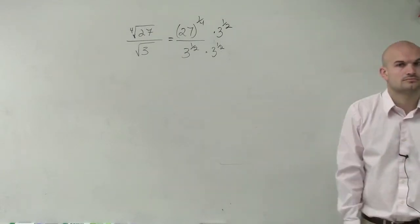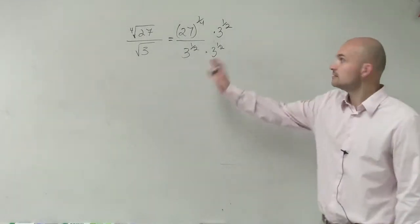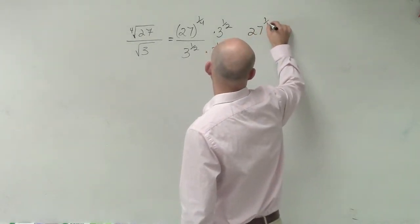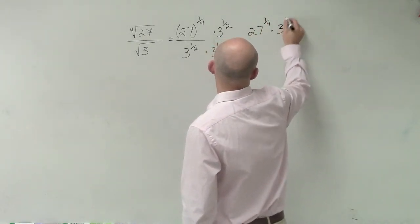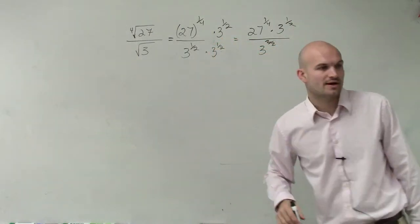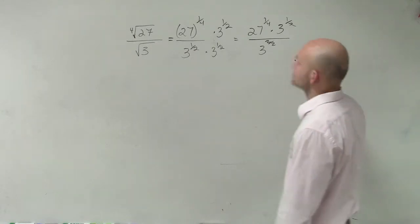Right? No, Ryan? It's incorrect? That's right. Therefore, 27 to the 1 fourth times 3 to the 1 half over 3 to the 2 over 2, right? Because 1 half plus 1 half is 2 over 2, which then just equals 3.